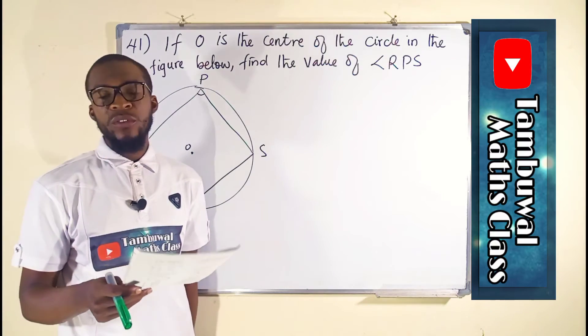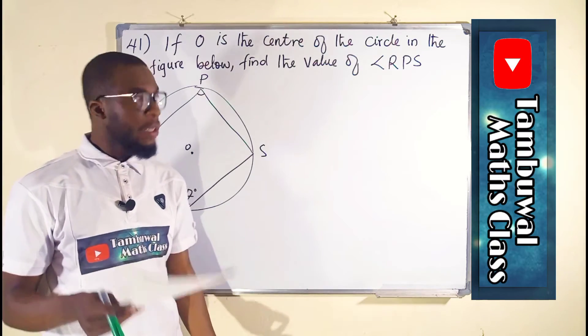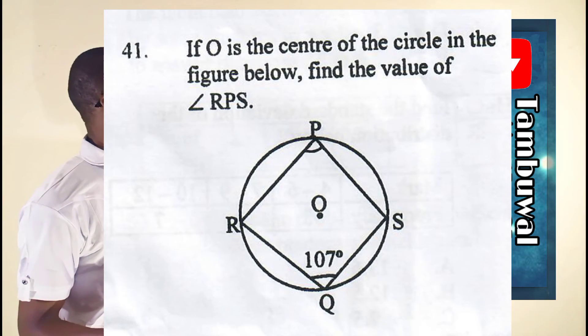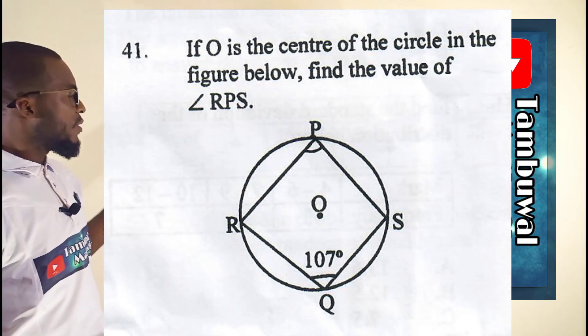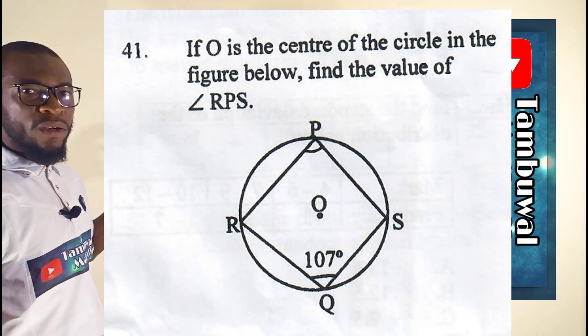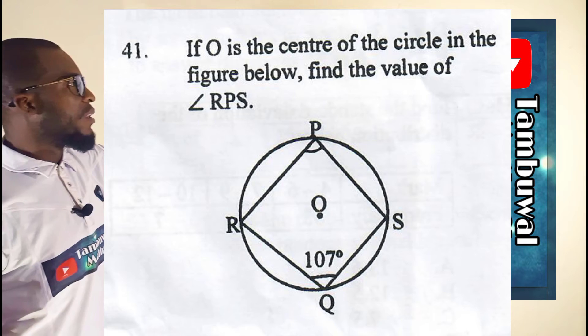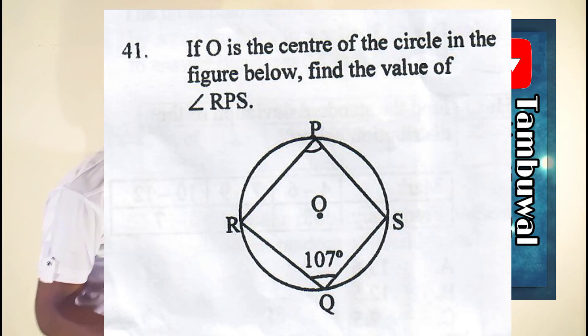Question number 41 is a question from circle theorem. It says if O is the center of the circle, and below this is the circle in which a quadrilateral is inscribed. We are asked to find the value of angle RPS.